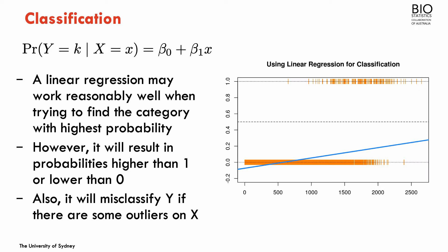But one first issue with the linear expression is that it will predict probabilities higher than 1 and lower than 0. Also, in a situation where one category is dominant relative to the other, category 0 will dominate the regression line and pull it toward low values. So, if you use this line to make predictions, the line doesn't even cross probability 0.5 in the range shown — pretty much all the data would be classified as category 0.